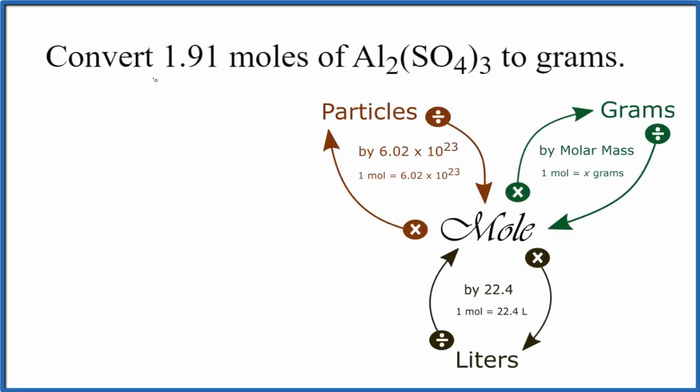In this video, we're going to convert 1.91 moles of Al₂(SO₄)₃ to grams. This is aluminum sulfate.